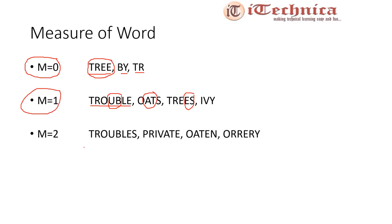For words where m equals two: take troubles — u followed by b is one VC combination, and e followed by s is another, giving m equals two. Similarly, private contains i followed by v (one combination) and a followed by t (another), so m equals two as well.